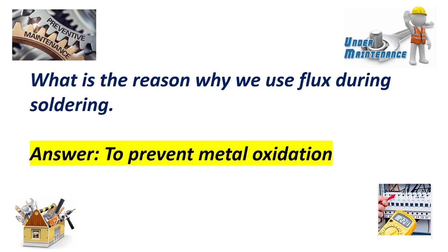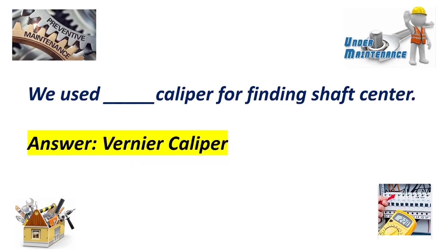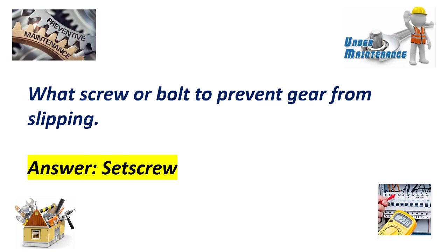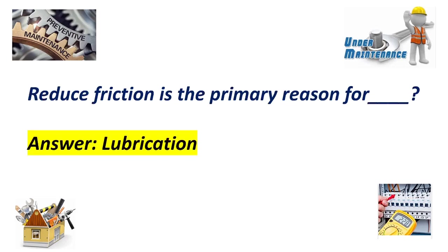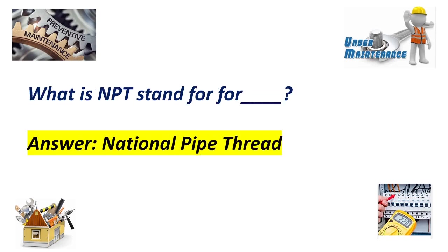What is the reason why we use flux during soldering? Answer: To prevent metal oxidation. We use a Vernier caliper for finding a sharp center. Answer: Vernier caliper. What is NPT? Answer: National pipe thread.